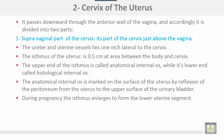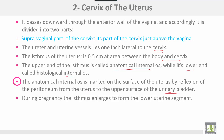The cervix passes downwards through the anterior wall of the vagina and is divided into two parts. The supravaginal part is the part of the cervix just above the vagina; the ureter and uterine vessels lie one inch lateral to the supravaginal part. The isthmus of the uterus is about half a centimeter between the body and the cervix. The upper end of the isthmus is called the anatomical internal os, while the lower end is called the histological internal os. The anatomical internal os is marked on the surface by reflection of the peritoneum from the uterus to the upper surface of the urinary bladder. During pregnancy the isthmus enlarges to form the lower uterine segment.